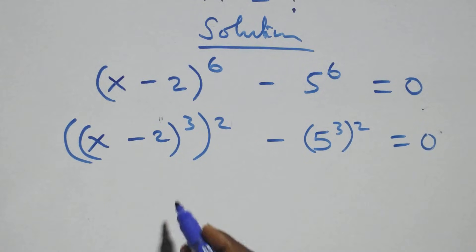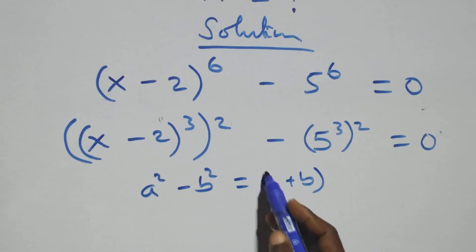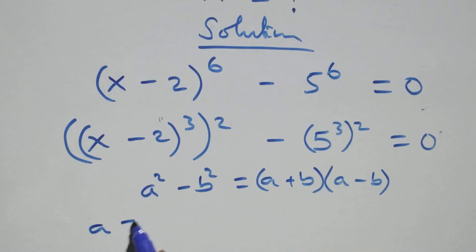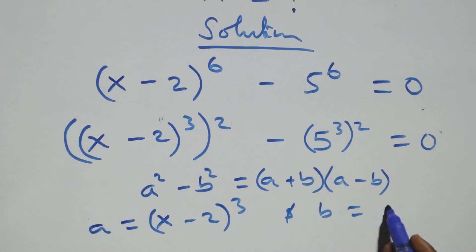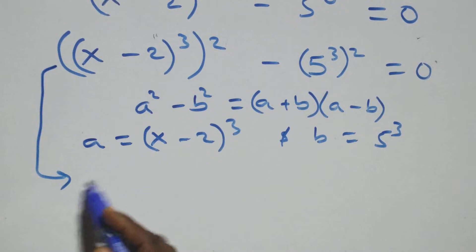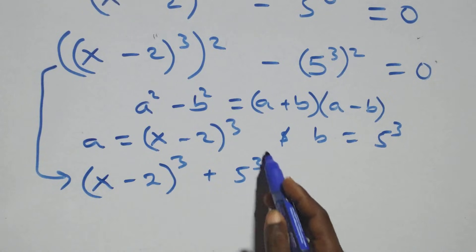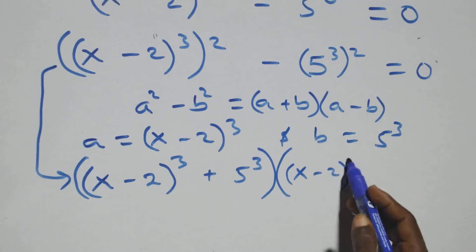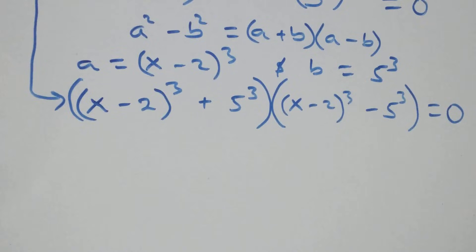This follows the identity a squared minus b squared equals (a+b)(a-b). Here, a stands for (x-2)³ and b stands for 5³. So the expression becomes: (x-2)³ plus 5³, in brackets, times (x-2)³ minus 5³, in brackets, equals 0.